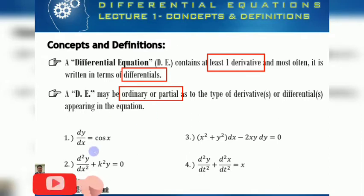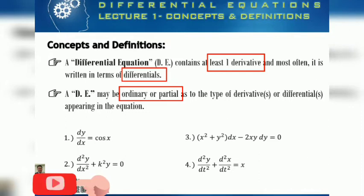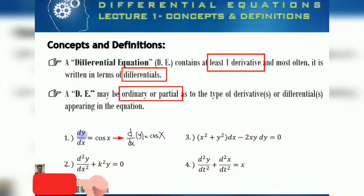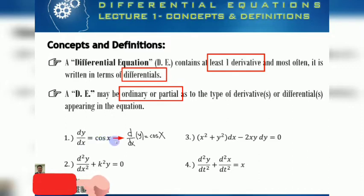Here is an example. Number one: dy over dx is equal to cosine x. We can also write this equivalently as d over dx of y equals cosine x. The derivative of y with respect to x is equal to cosine x — both forms say the same thing.